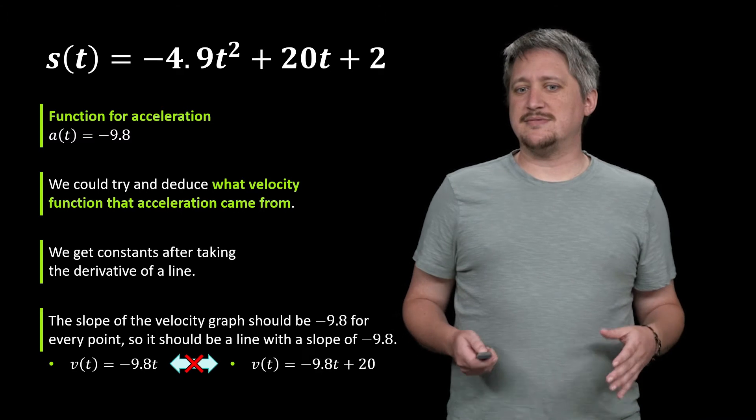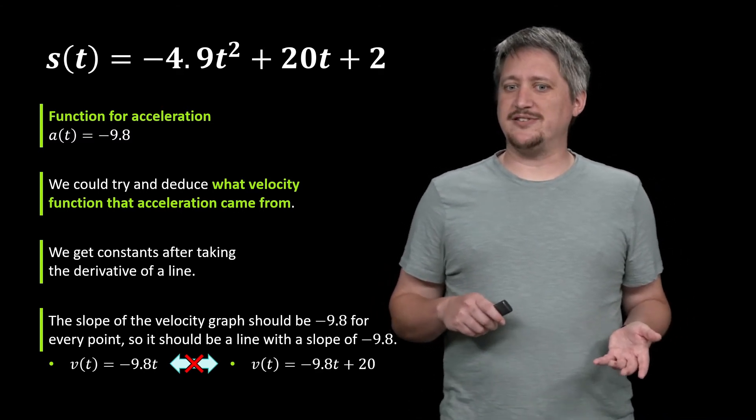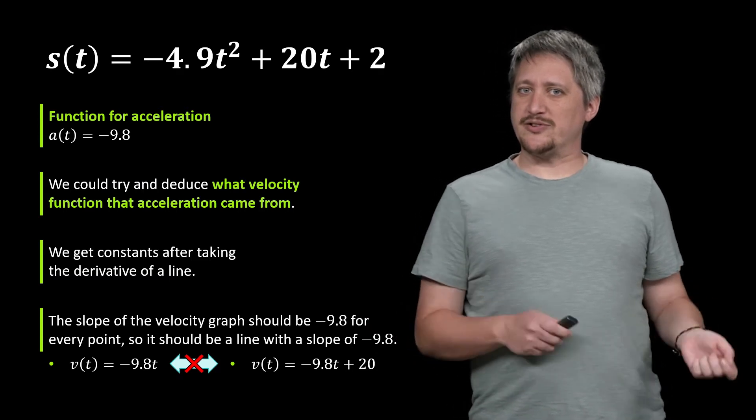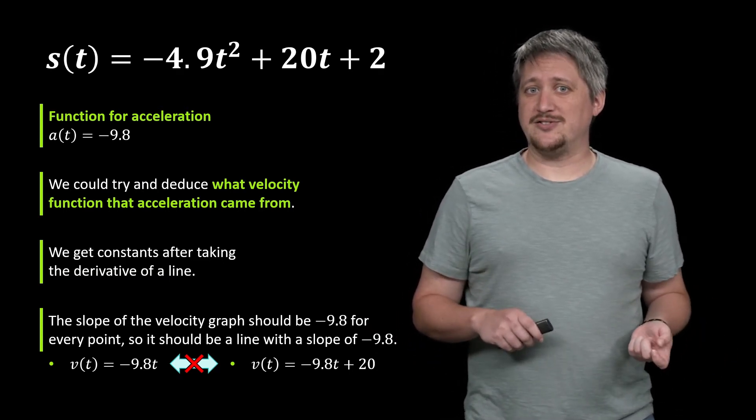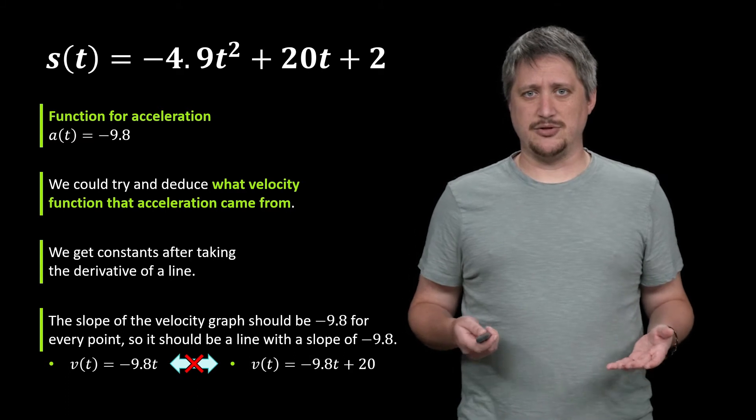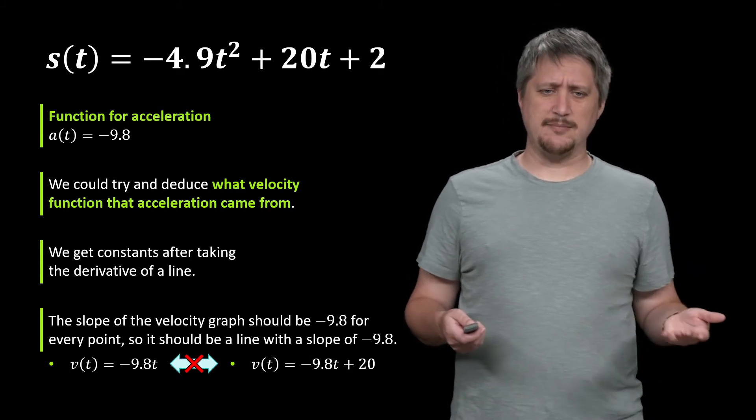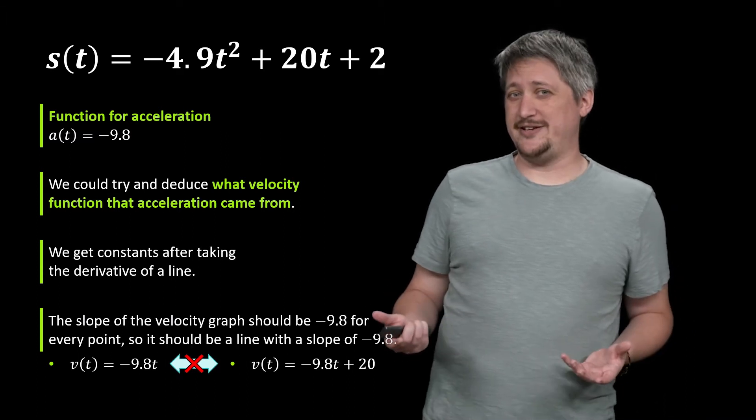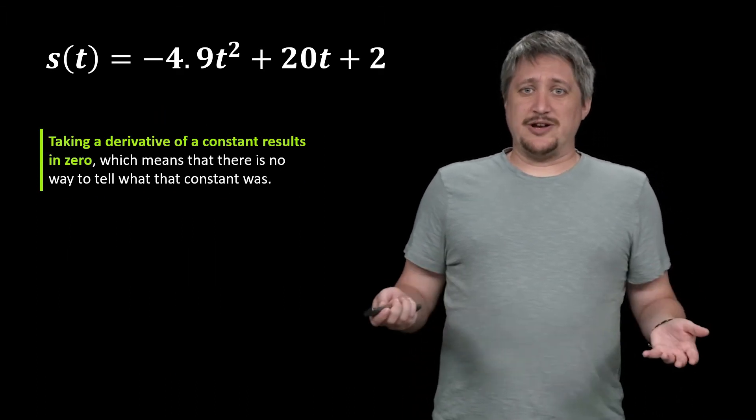But wait. Our actual v of t was this negative 9.8t plus 20 which wasn't quite what we just figured out. So we went through what seemed to be a perfectly valid thought process and we came up with a v of t that was somehow not the correct v of t. So what gives?